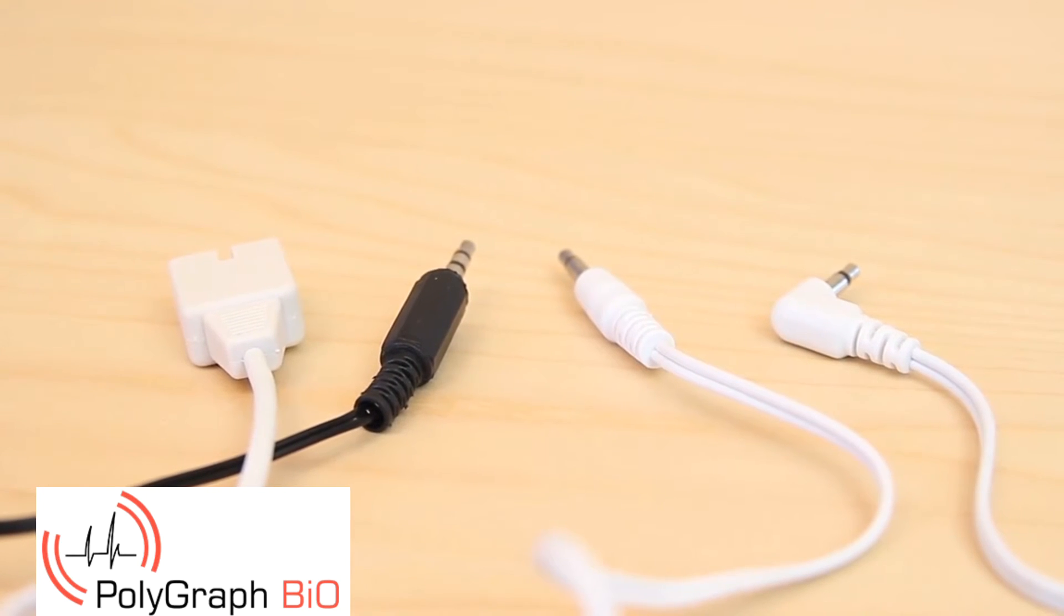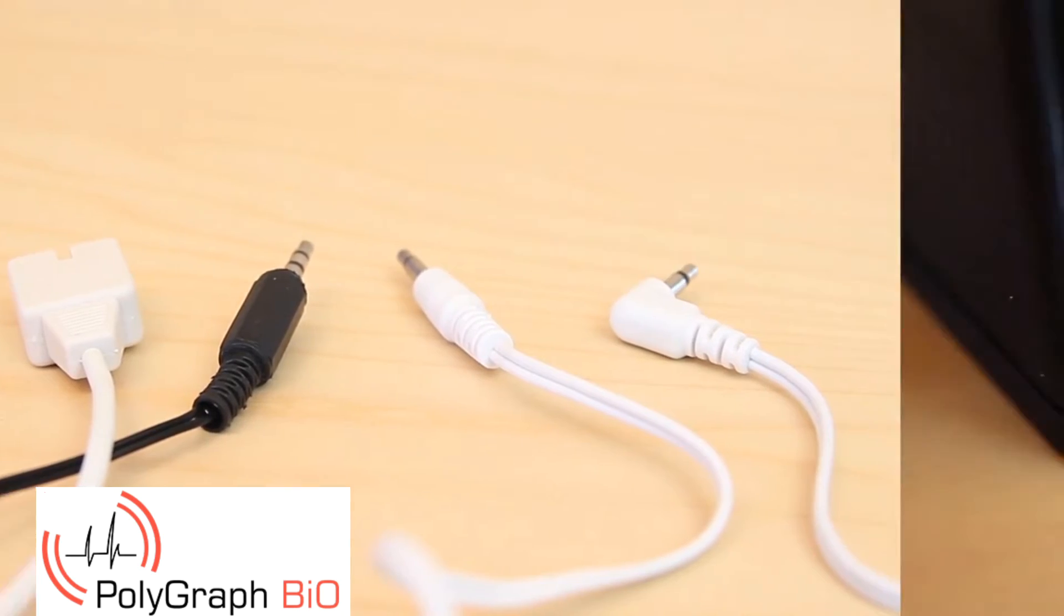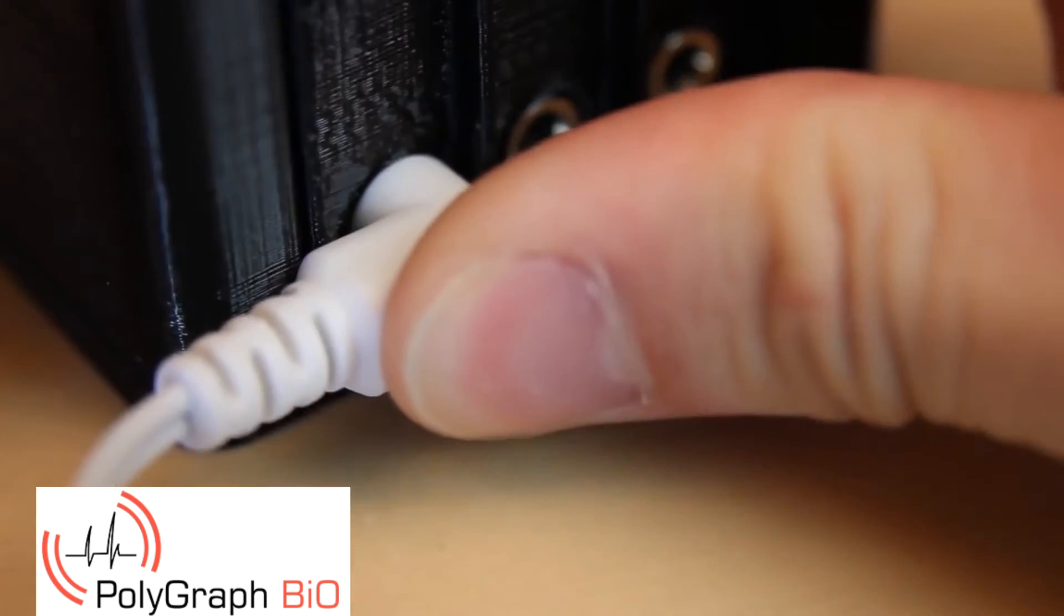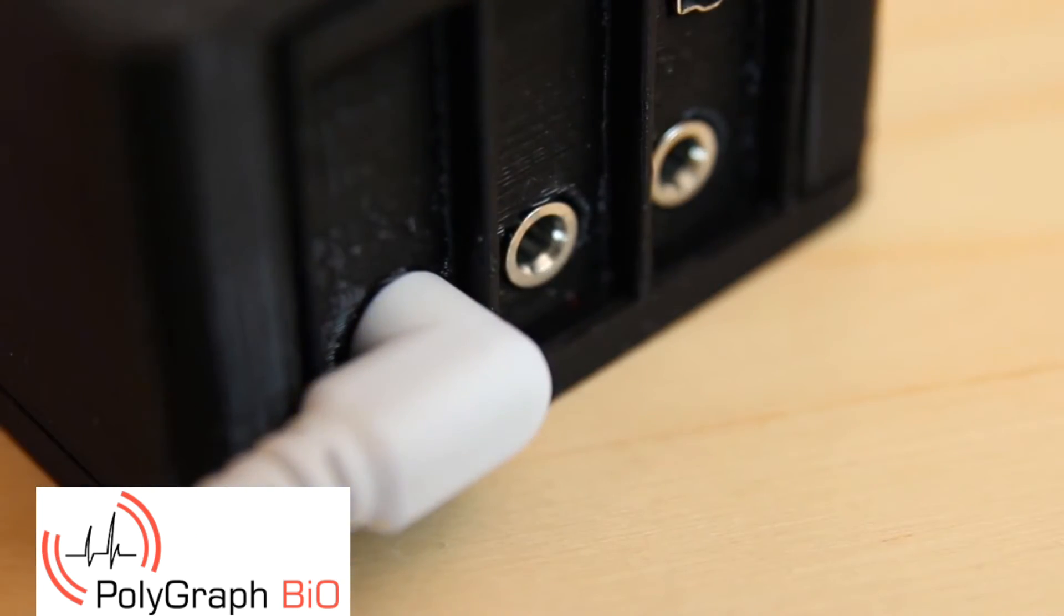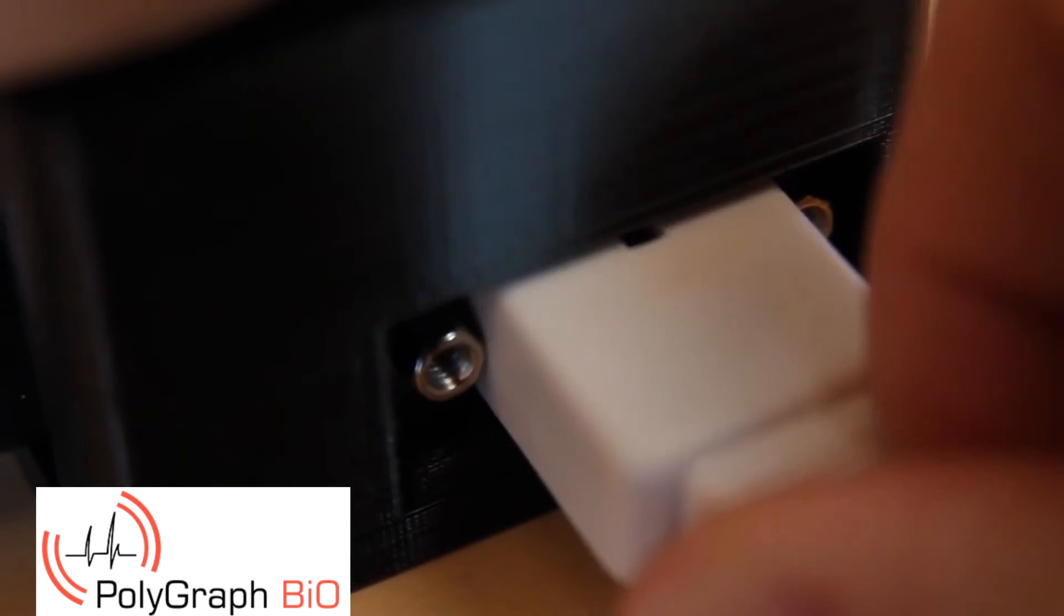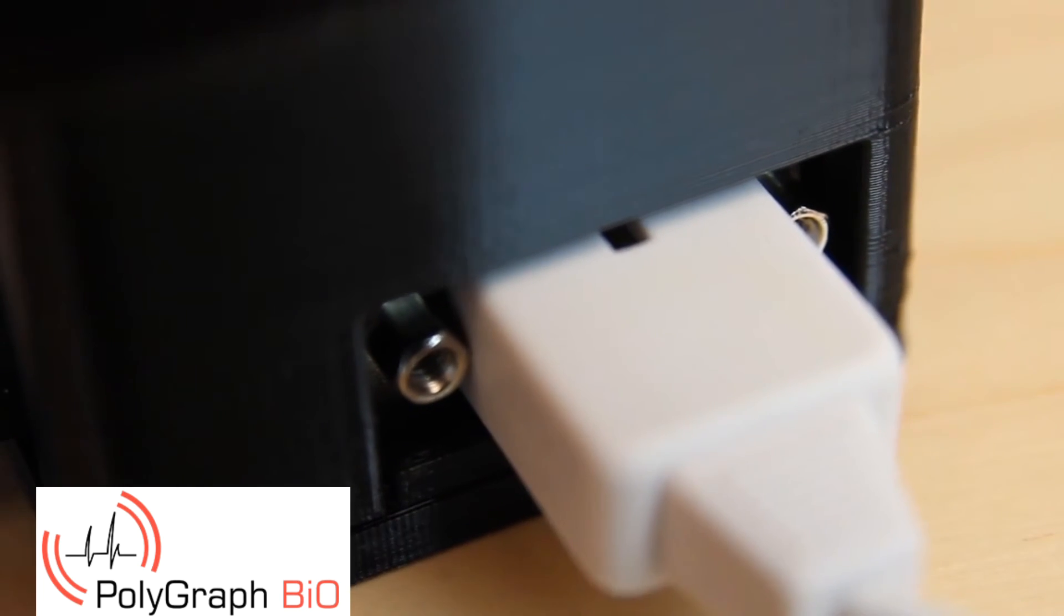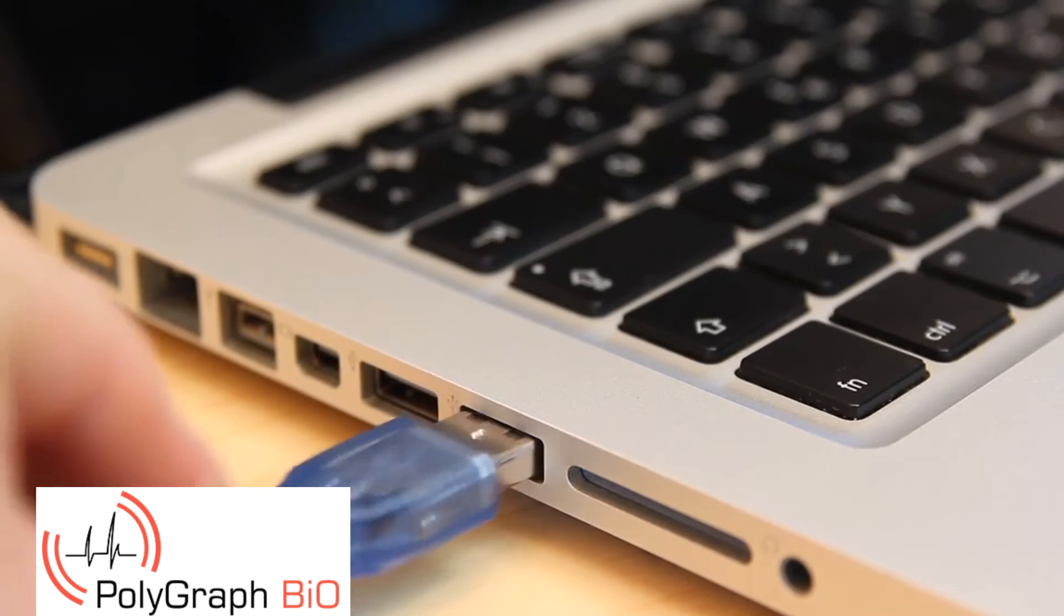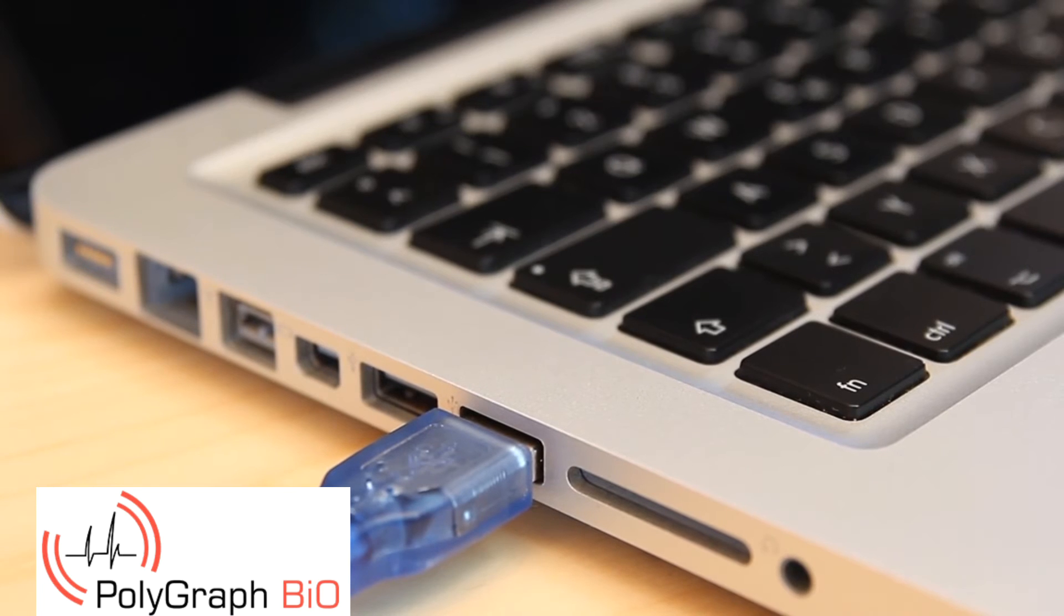Please be aware that the order of where to connect the probes is key. The electrodes for measuring the skin resistance have to be plugged into the port on the far left. The breathing rate sensor has to be plugged into the middle port. Next, plug the heart rate monitor into the port on the right-hand side of the connection box. Finally, connect the connection box to your computer using the included USB cable.